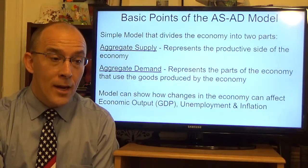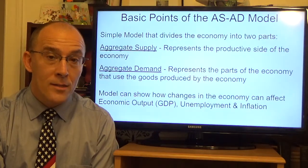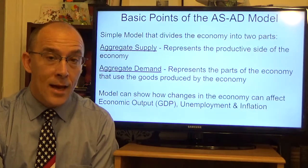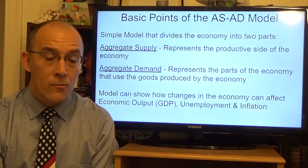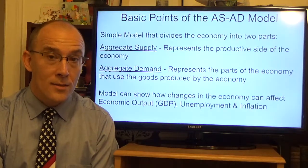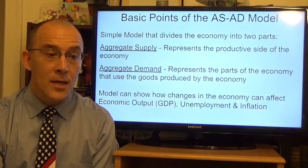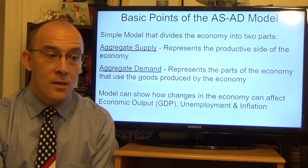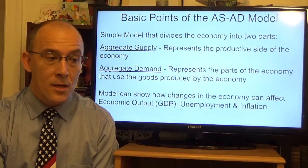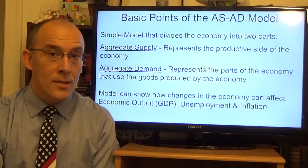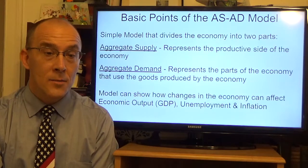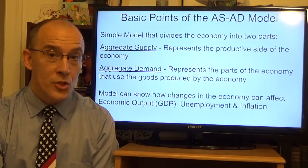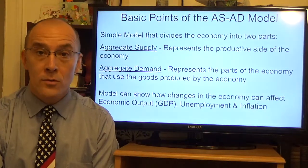The aggregate supply-aggregate demand model is a relatively simple model that divides the economy into two parts. There's the aggregate supply part, representing the productive side of the economy — all the parts producing finished goods. The demand side represents the parts of the economy that utilize those goods. The model is useful because it shows the three big macroeconomic indicators: the level of economic output (GDP), the amount of unemployment, and the level of inflation.